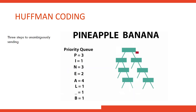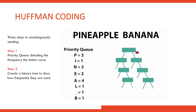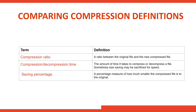There are three steps to unambiguously sending information. Step one: build a priority queue detailing the frequency that each letter occurs — for example, P occurs three times, I once, N three times. Step two: create a binary tree built from the bottom up, with the most frequent characters at the bottom and least frequent at the top. Step three: traverse the tree — the traversal method dictates how the Huffman encoding is produced.